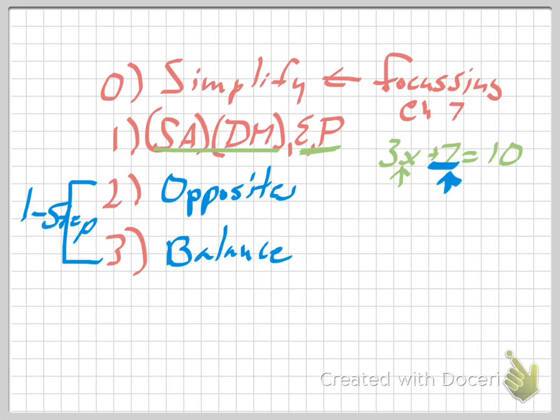So what we're going to focus on is last night, or on 7-1 at least, we talked about SADMEP, and we did equations where we had two steps to solve. Today what we're going to do, multi-step equations, gets into doing some of this simplification before we get into SADMEP opposites and balance. So a couple different kinds of equations that you're going to run into that have to be simplified first.